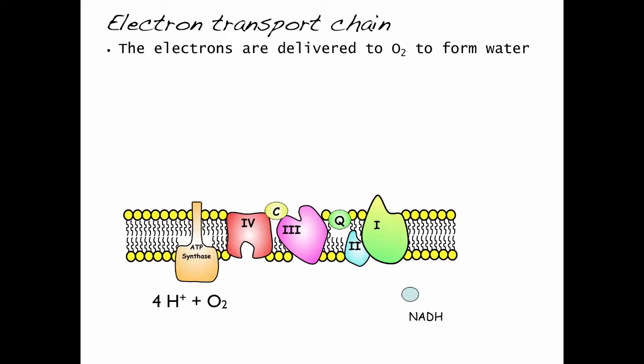So let's go back to the electron transport chain and recall that the electrons are delivered from NADH and FADH2 to oxygen to form water. So here we go, we've got NADH dropping off its electrons, and they're going to end up at oxygen, which receives the electrons, combines with hydrogen to form water.